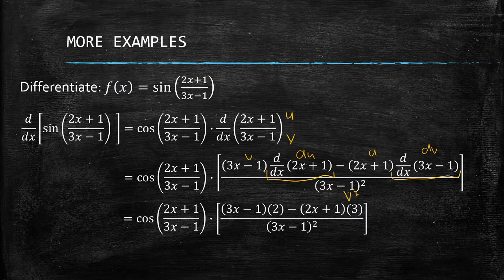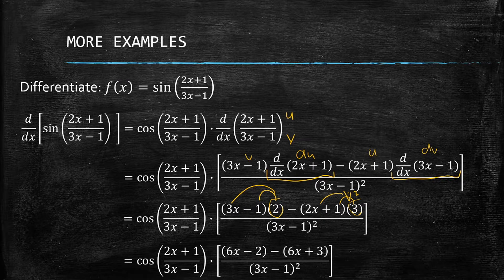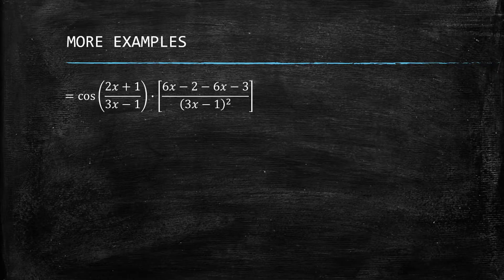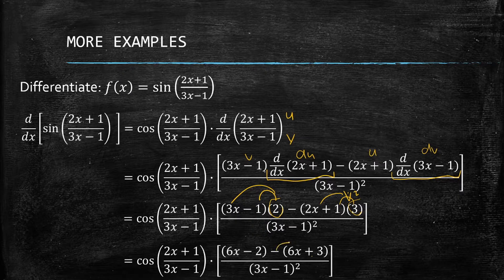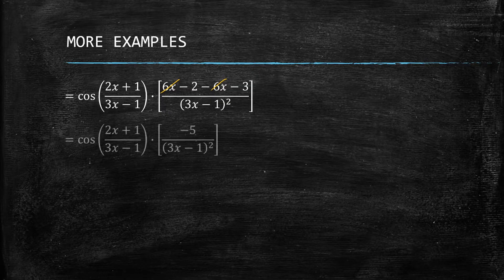We distribute 2 and 3 to our terms, giving us 6x minus 2 and 6x plus 3. Take note: there is a minus sign, so we need to distribute it, giving us 6x minus 2 minus 6x minus 3. The 6x terms cancel out, and negative 2 minus 3 is just negative 5.